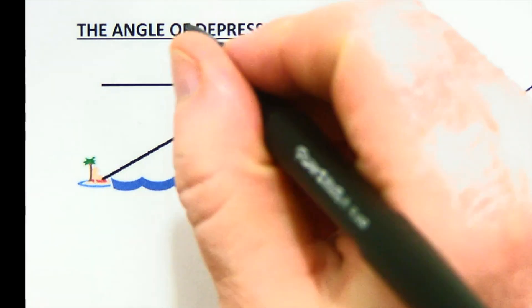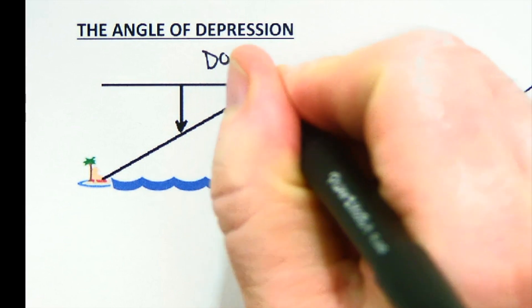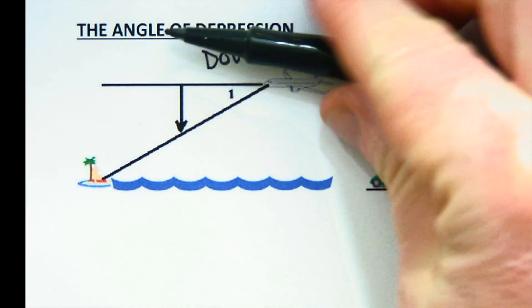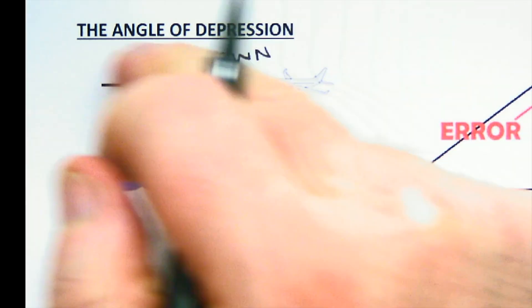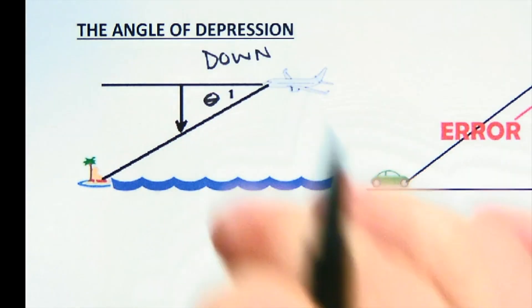But angle of depression, if you're depressed, is looking down, of course. And here it seems to be pretty easy. It's just looking down at the island. The angle of depression is from the horizon looking down. So this is good.